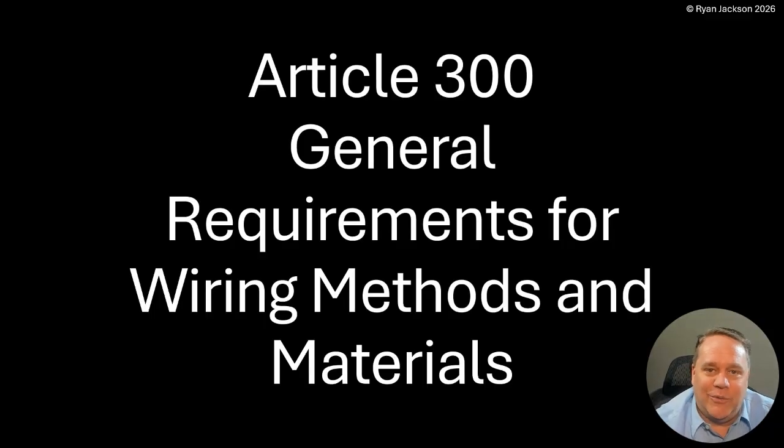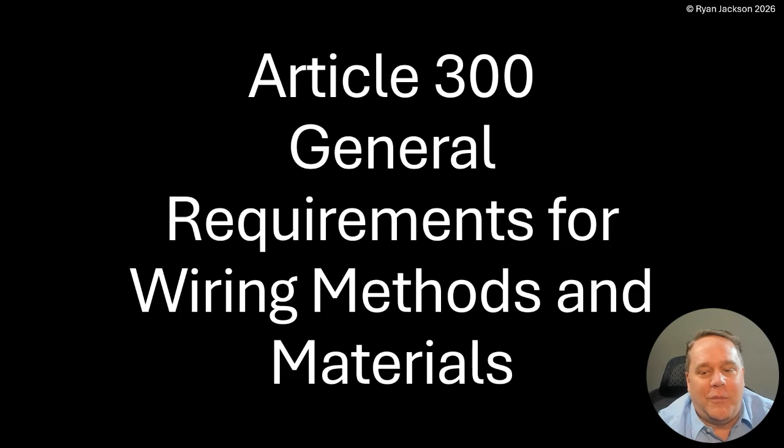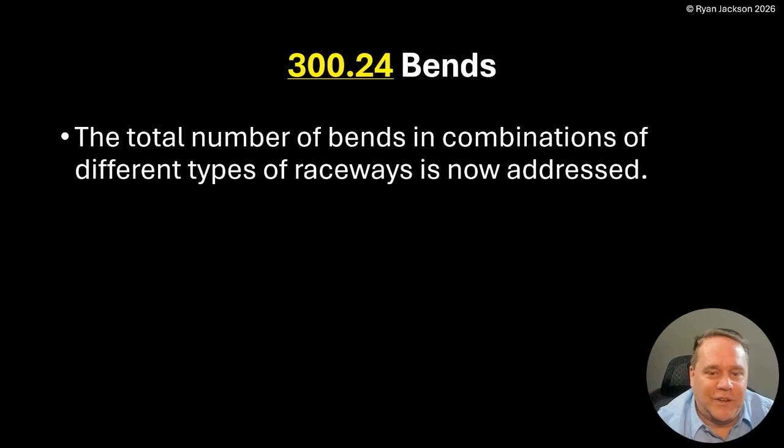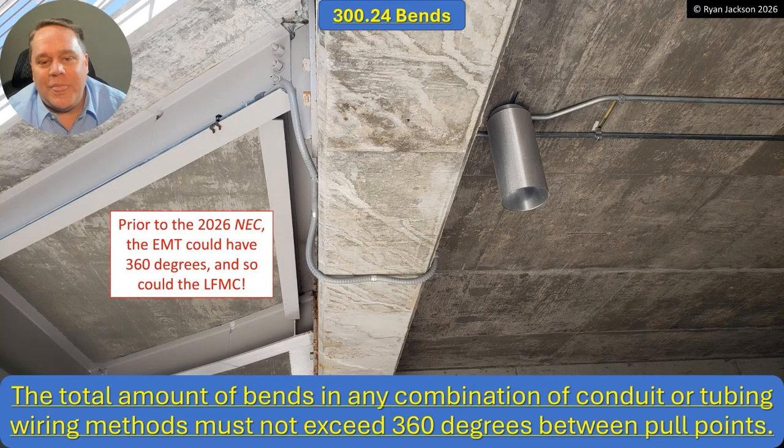Well, it depends on which edition of the code. Prior to the 2026, the answer was yes — you could absolutely do that. My buddy Russ up in Boston caught this and brought it to the attention of the code making panel, and everybody was shocked that he was dead right: it was not a violation. So Article 300 — general requirements for wiring methods and materials — 300.24, Bends: the total number of bends in combinations of different types of raceways is now addressed.